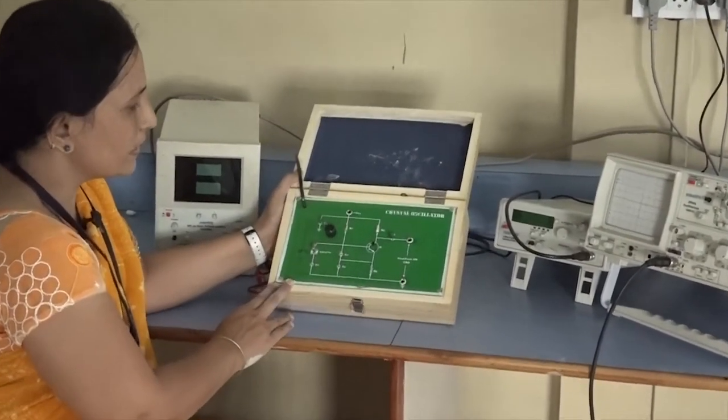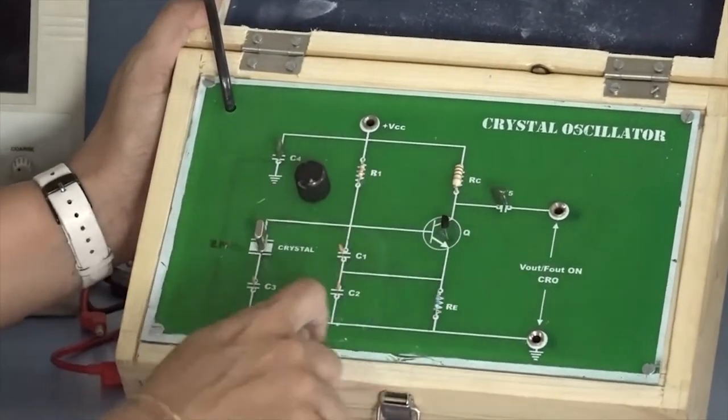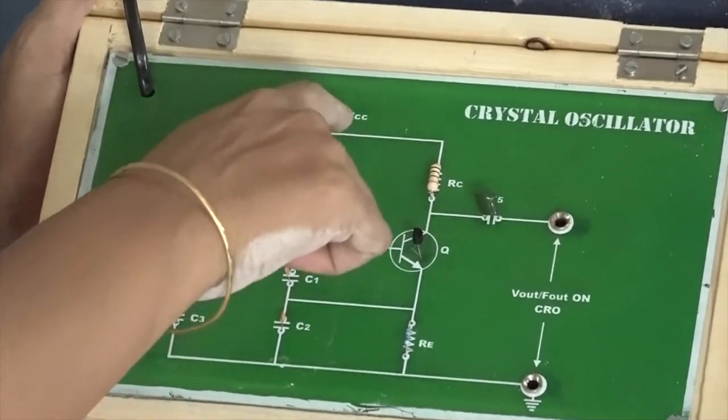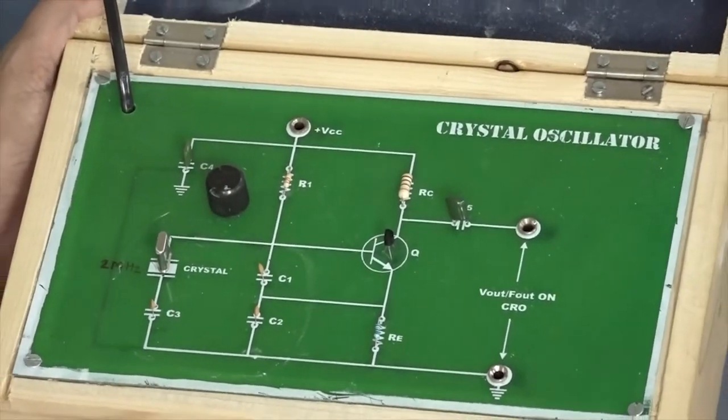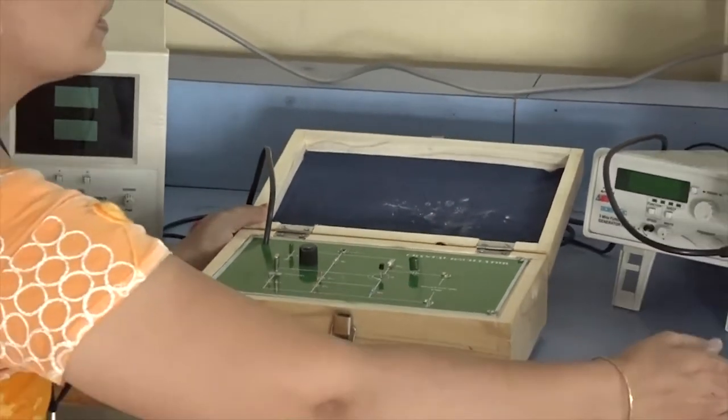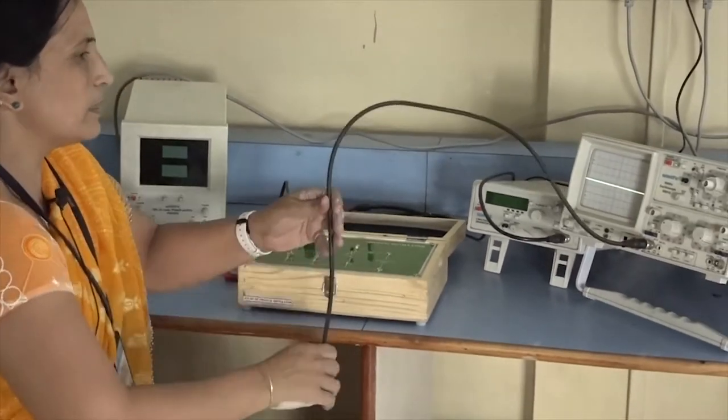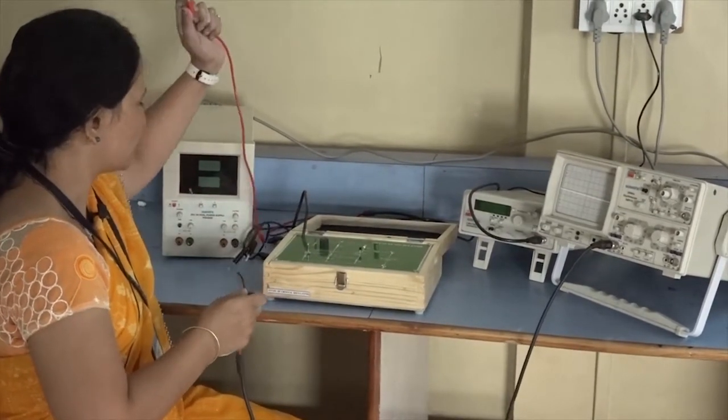This is the circuit diagram. Here it is the crystal which is of 2 megahertz and this is the feedback network. Here you have to provide the VCC you can provide it directly or through the DC power supply. After providing the VCC just you have to connect the CRO at the output side and it will generate AC signal at the output side.